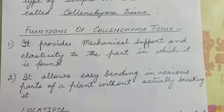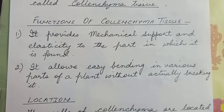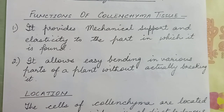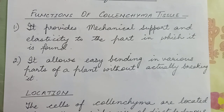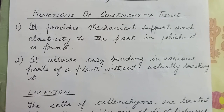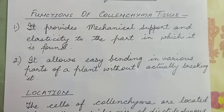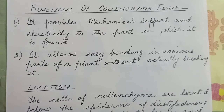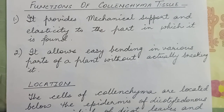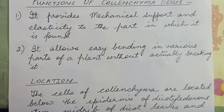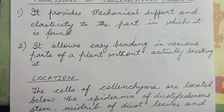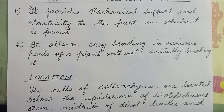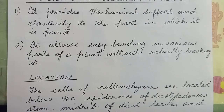The functions of collenchyma tissue: it provides mechanical support and elasticity to the part in which it is found. It provides elasticity and flexibility to the plant so that they do not break during strong winds. The second function is it allows easy bending in various parts of a plant without actually breaking it.